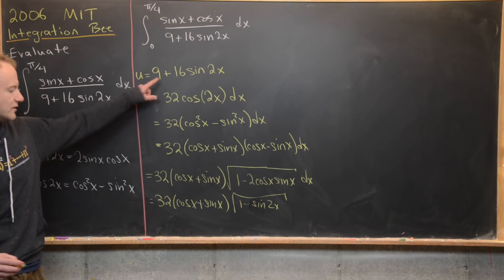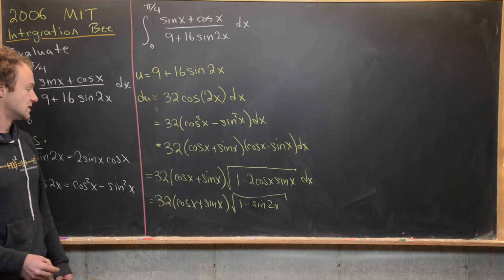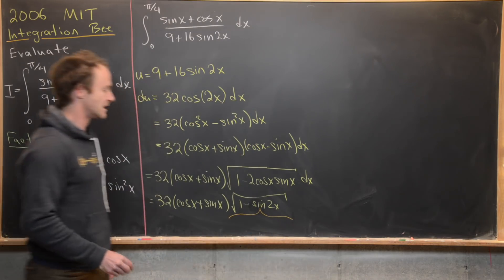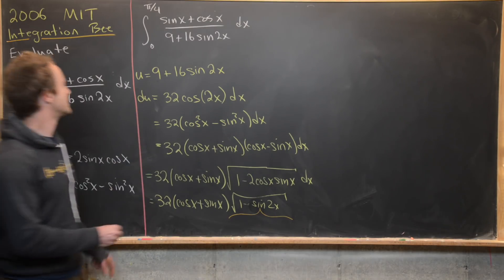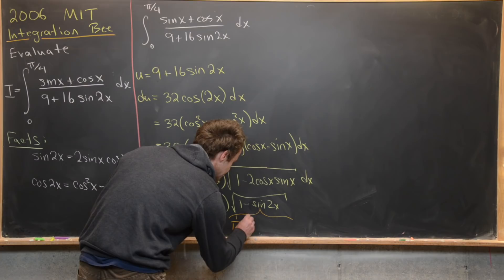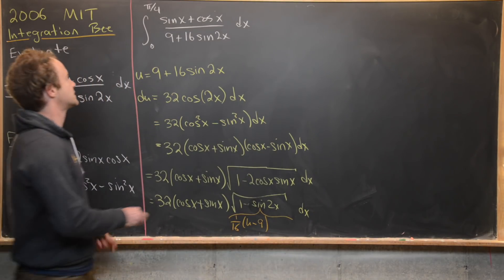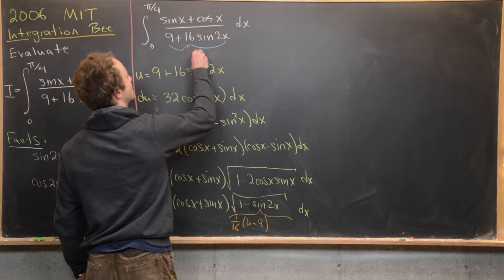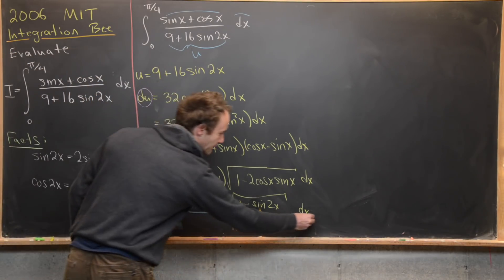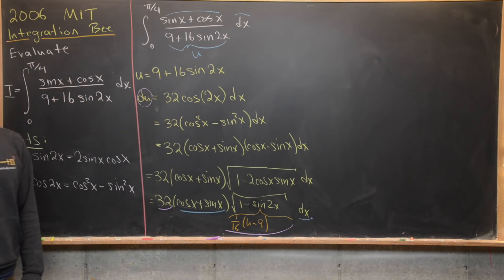Our original substitution has sine 2x in terms of u. So if we solve u = 9 + 16 sine 2x for sine 2x, we get sine 2x equals one over 16 times (u minus 9). Now by our substitution, the denominator becomes u, and the sine x plus cosine x dx piece can be replaced with du divided by 32 times the square root of 1 minus (u minus 9)/16.